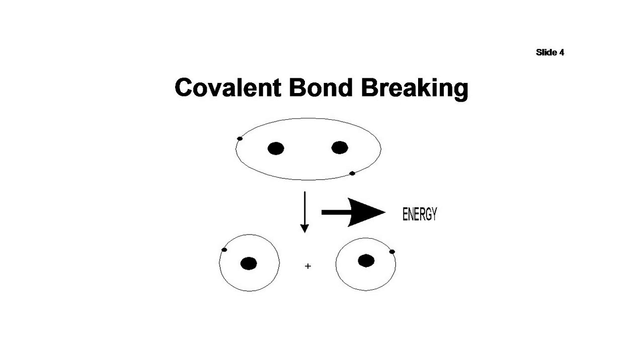So, when a covalent bond is broken, the unneeded energy is released and can be used in the formation of a different covalent bond. The energy required to form one covalent bond comes from breaking another covalent bond.